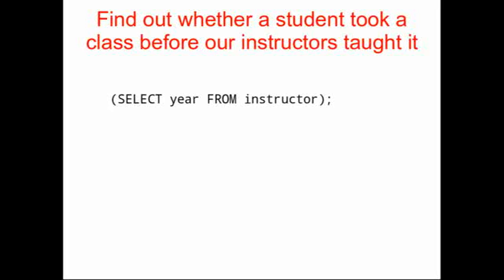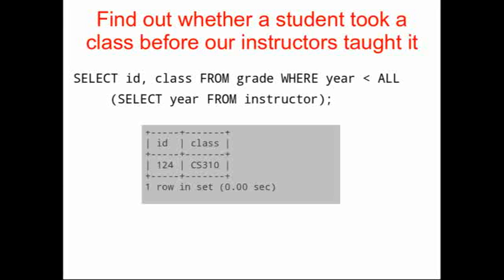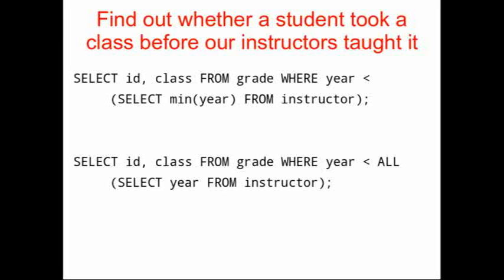An alternative way of doing it, instead of identifying the minimum year, is using the keyword ALL. We can identify any ID or class from grade where year is less than ALL of the results returned by SELECT year FROM instructor. It gives us the same result. So we've seen two different ways of identifying students who took classes before our instructors taught them: using MIN(year) and using the keyword ALL.